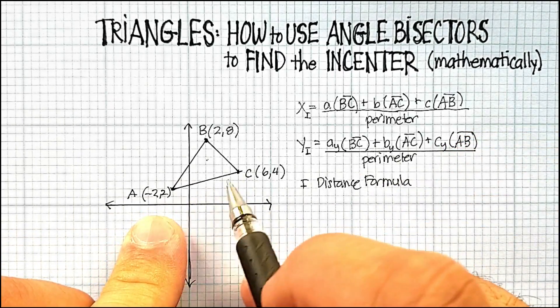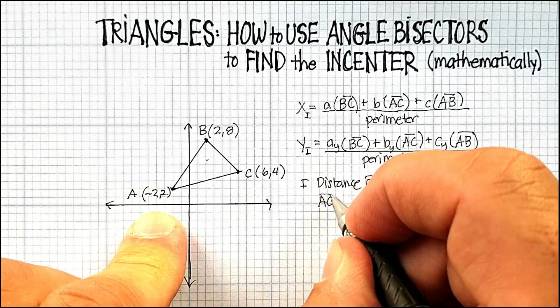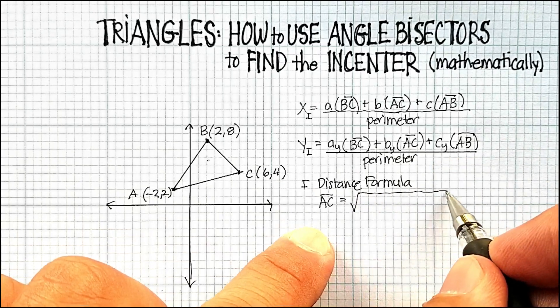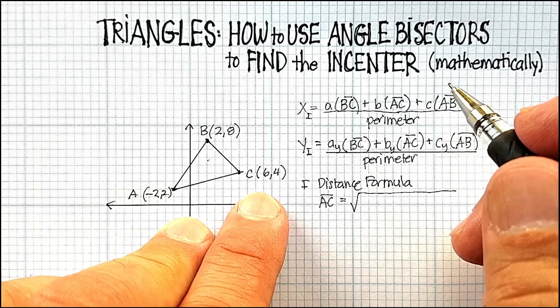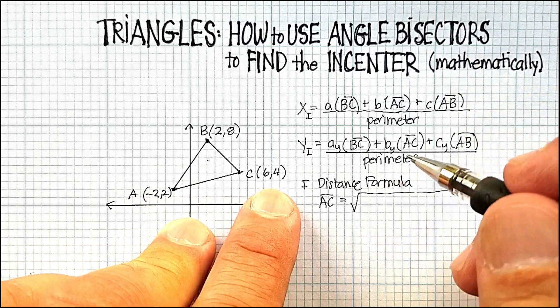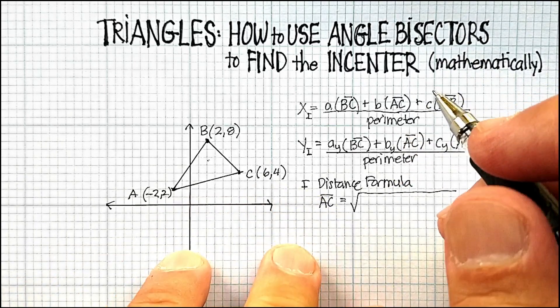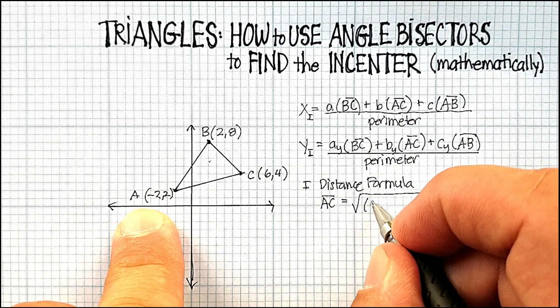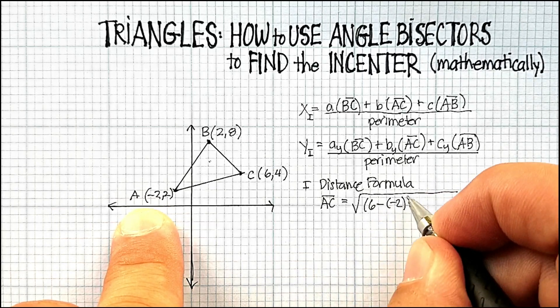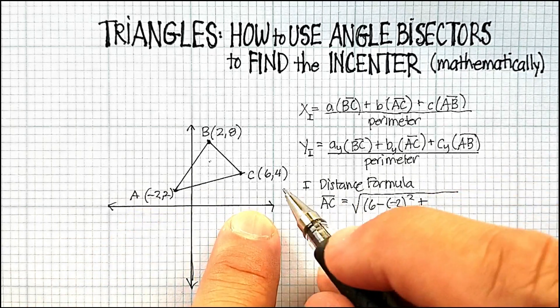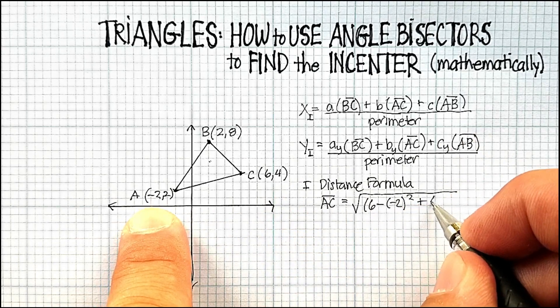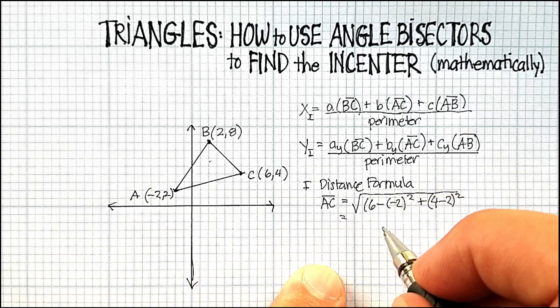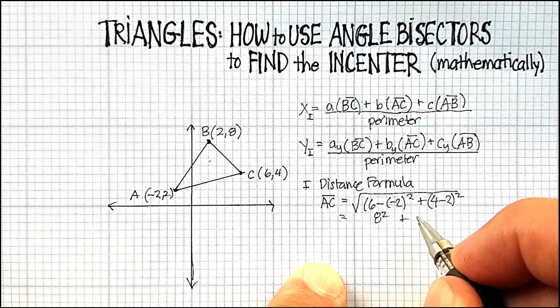So I'm going to use the distance formula to find each one of the sides of my triangle. So side AC is equal to, remember the distance formula is (x1 - x2)² plus (y2 - y1)². So I'm going to say (6 - (-2))² plus (4 - 2)².